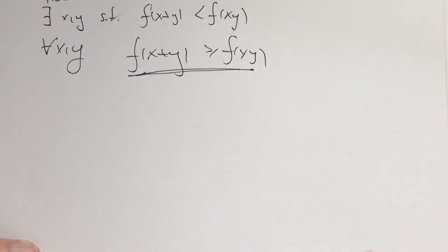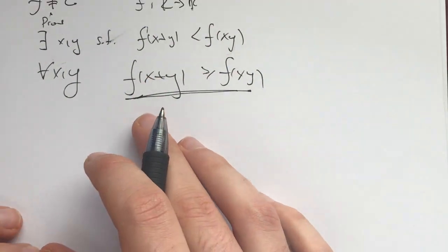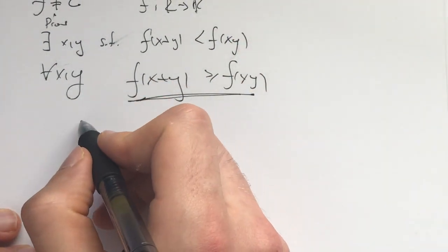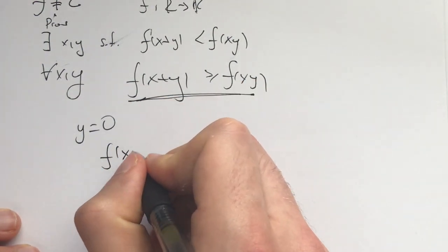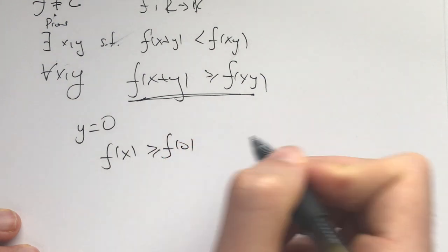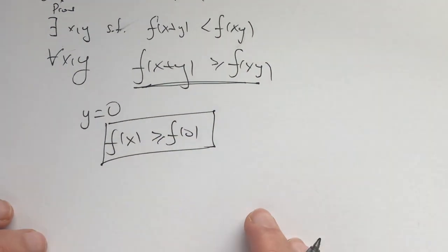So now that you've hopefully paused, let's plug some stuff in. The first thing for me is if I plug in y=0, what do I get? I get f(x) ≥ 0 for every single x. Okay, so f(x) is greater than or equal to some constant.